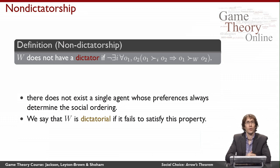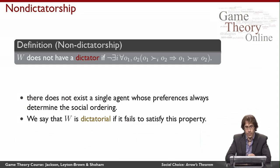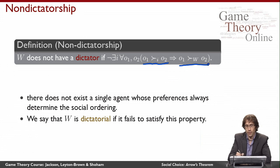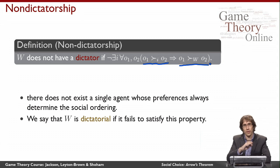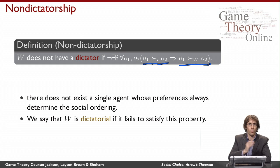Finally, I'll define non-dictatorship. A social welfare function does not have a dictator if there does not exist some agent i for whom the following property is true: for all outcomes O1 and O2, if agent i likes O1 better than O2, then the social welfare function must also like O1 better than O2. A dictator is simply somebody who determines the social welfare function — the SWF just listens to one input, ignores everybody else's preferences, and outputs that one dictatorial agent's ordering.